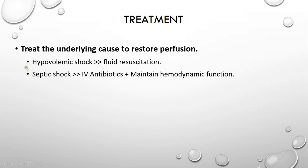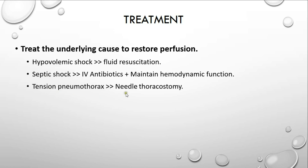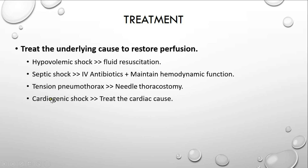Goals of treatment for septic shock will be according to the early goal-directed therapy guidelines, which will be explained in the next video. For tension pneumothorax, treatment involves needle thoracostomy followed by chest tube insertion to reverse the obstructive shock. For cardiogenic shock, the aim is to treat the cardiac cause in order to improve cardiac output.